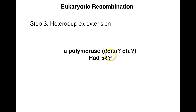Third is heteroduplex extension — making more DNA at the end of the three-prime strand that invaded the second strand of DNA. This slide is largely blank because we know there's probably a polymerase involved, maybe polymerase delta or polymerase eta, and potentially RAD54. The proteins for this process are not as well defined as the earlier steps. RAD54 might be important for removing RAD51, which could be critical to allowing synthesis by one of these polymerases.